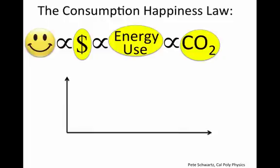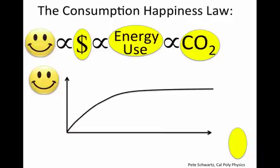And so if we were to graph happiness against, say, wealth, or any of these because they are proportional to each other, we'd get a curve that's not a straight line. It looks something like this, and that would probably be a log graph because of the vast disparity in wealth, energy use, and carbon dioxide emissions.